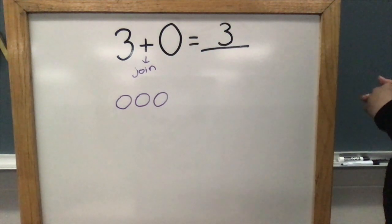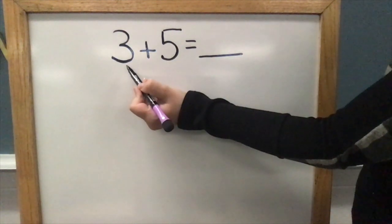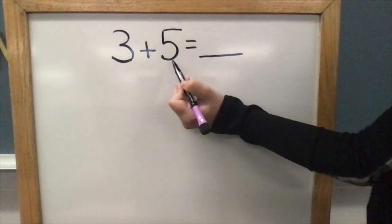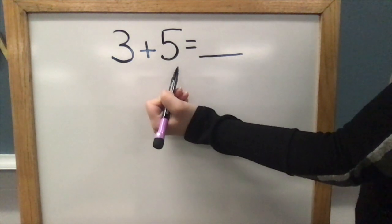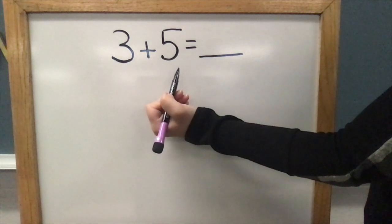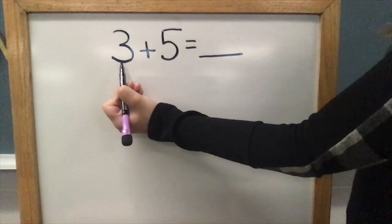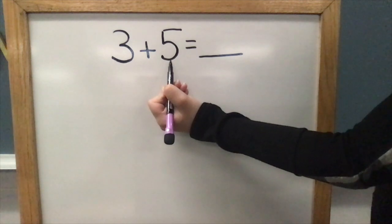Let's do one more, but this time you get to solve the equation. Our equation says three plus five equals. What does three plus five mean? You're right. Three is being joined with a group of five.